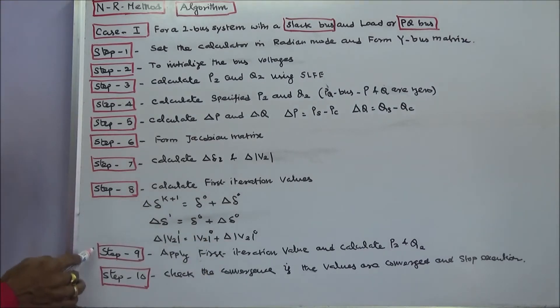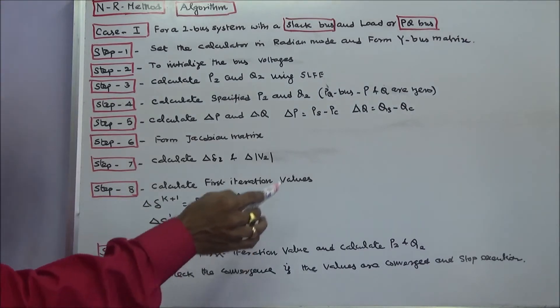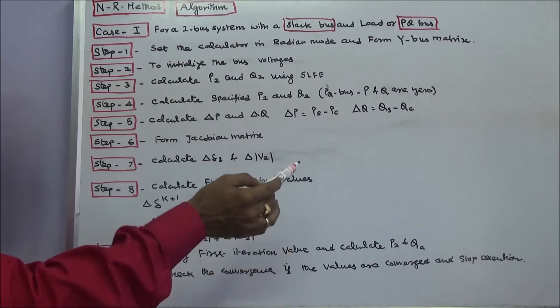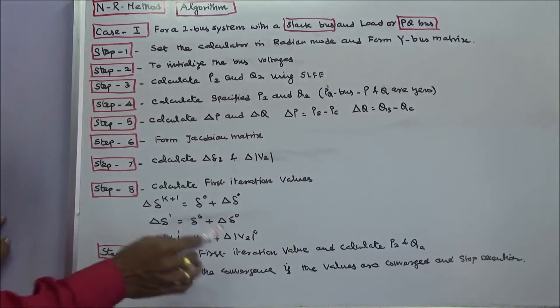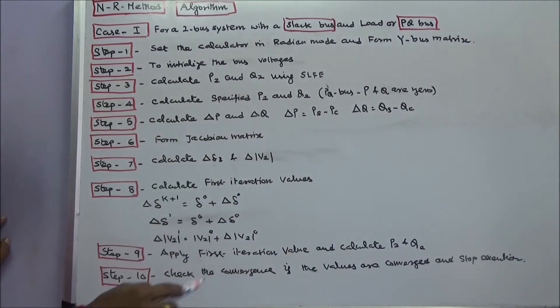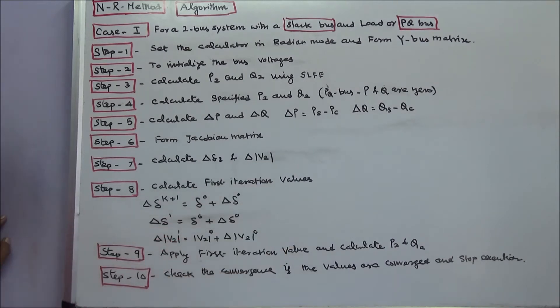Step 9: apply the first iteration values and calculate again P2 and Q2. Step 10: check for convergence. If the values have converged, stop the execution.